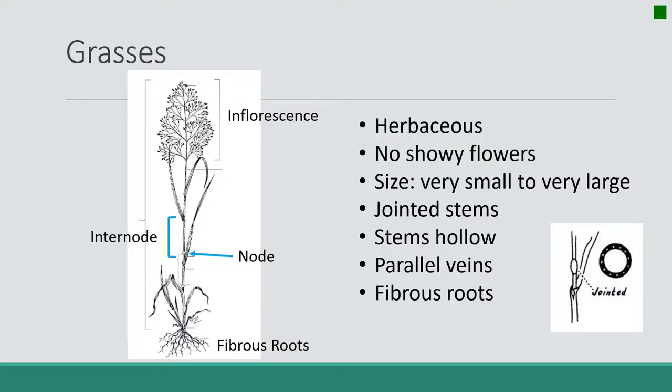So what makes our grasses special? What differentiates them from our forbs and our shrubs? Well, grasses have no showy flowers. They can be small to large. They have jointed stems, so they have nodes and internodes. Their stems are also hollow. Their leaves have parallel veins and their root systems are fibrous. What will help differentiate grasses from grasslikes will be mainly the presence of jointed stems with nodes and internodes and hollow stems.